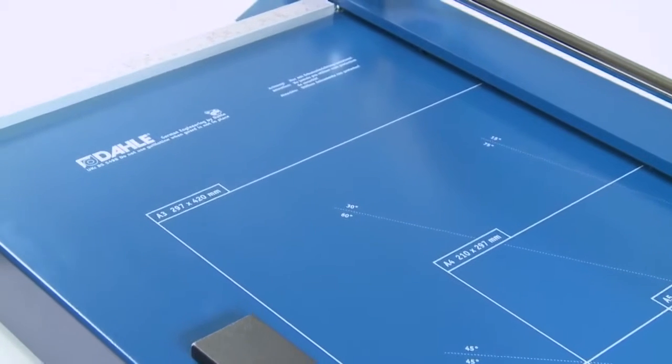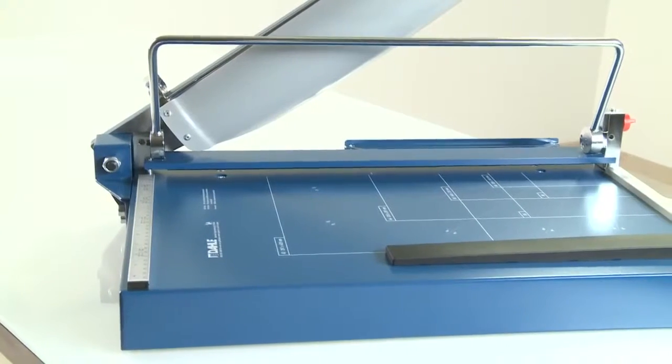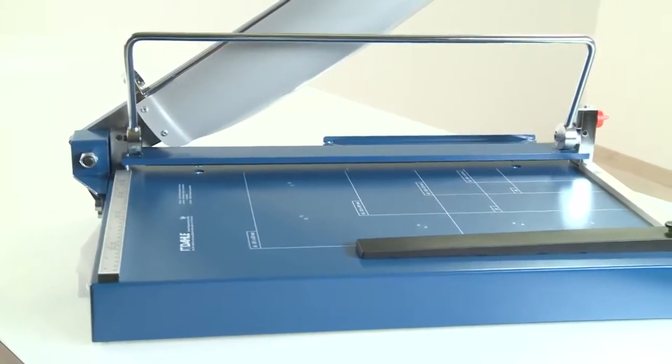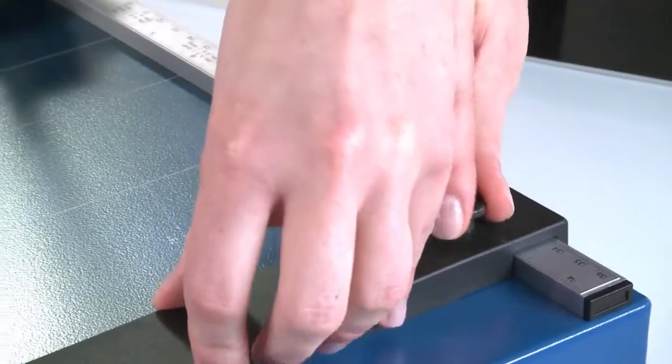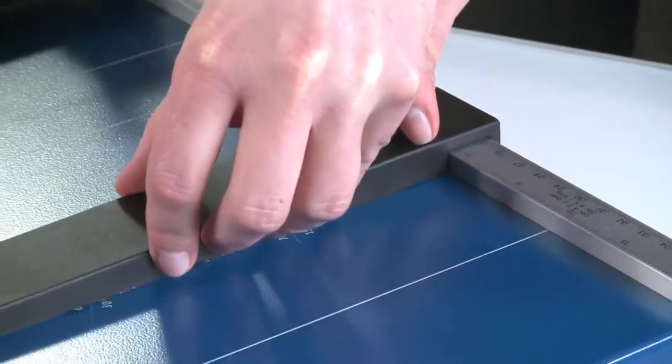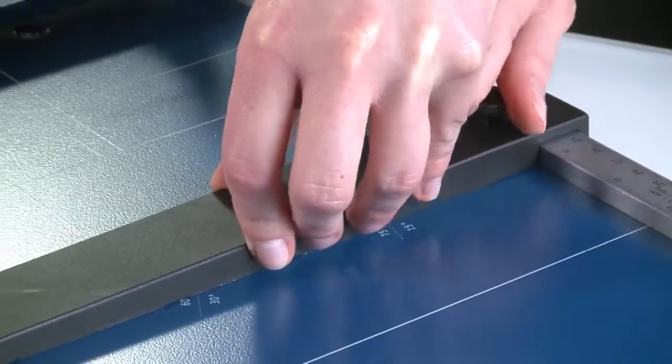Two scale bars marked in millimeters are guaranteed to give you an exact 90-degree cut. The metal backstop makes easy work of aligning the cutting stock and can be used on both scale bars.